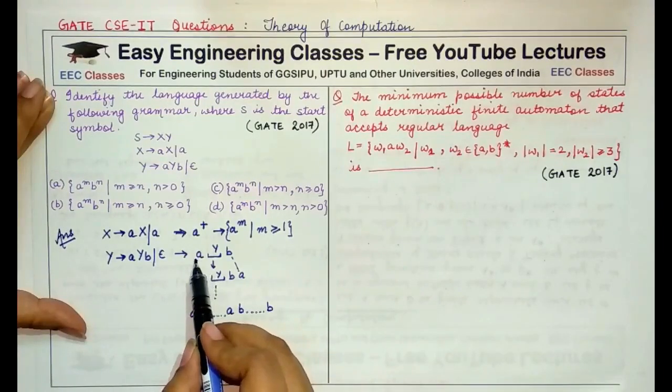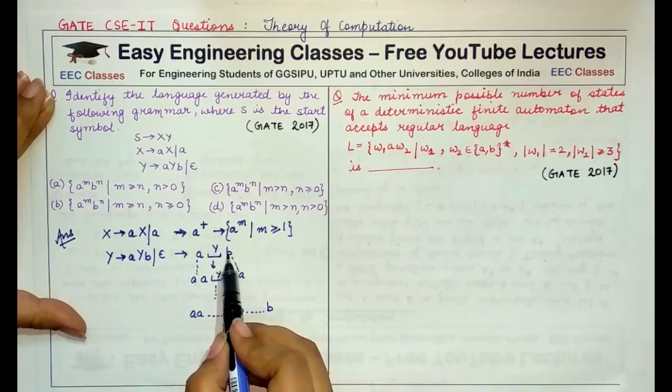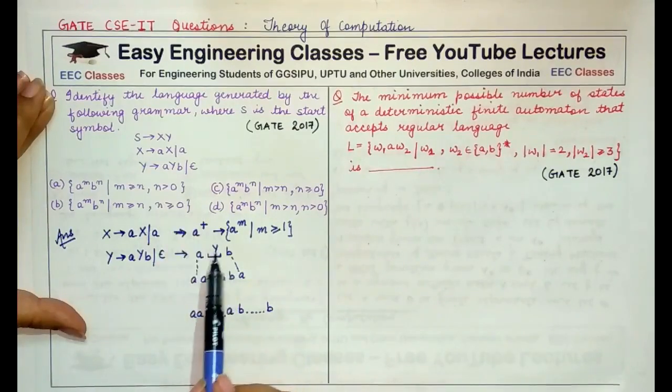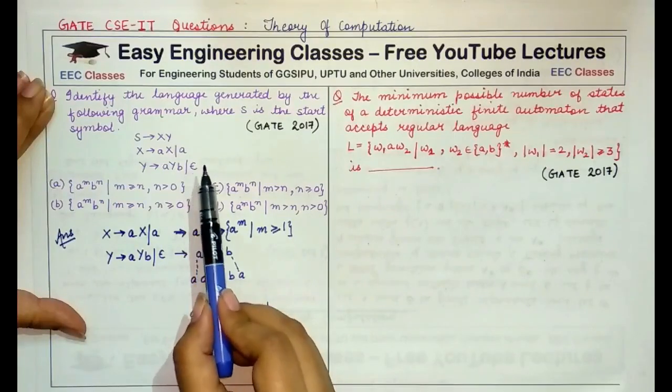Because every time an A is occurring, it is being followed by a B. And when we have to terminate this string, we will replace Y with an epsilon or empty symbol.